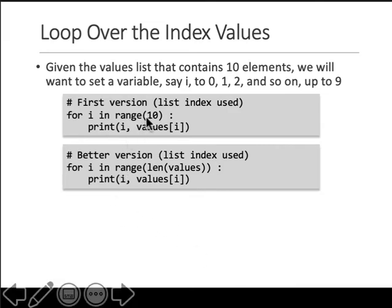Now in this case, you know that your list had only 10 elements, so you can write that. But what if there is a list whose length is determined at runtime, meaning the list can increase and decrease in size? Then if you give 10 and the list has now grown to 15 members, this code will not work. So a better version is for i in range of length of values.